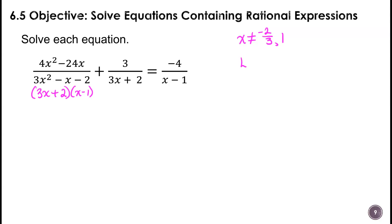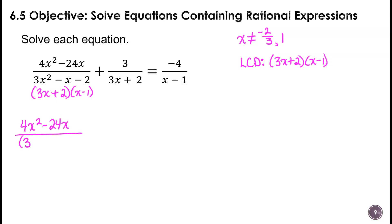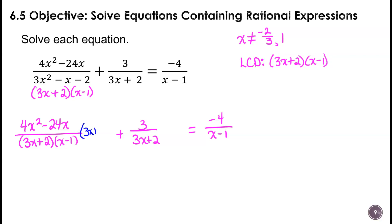Our common denominator, the LCD, is going to be those two factors: 3x plus 2 times x minus 1. Now I'm going to rewrite this so we can multiply. Organization will help you make it through the process, so try to keep things in some type of order that makes sense. We're going to multiply by 3x plus 2 times x minus 1, marking out the part that is in the denominator and multiplying what's left by the numerator.